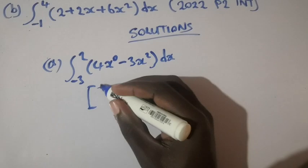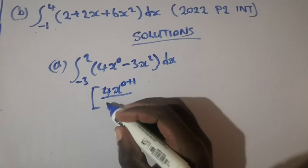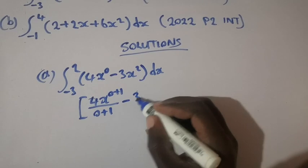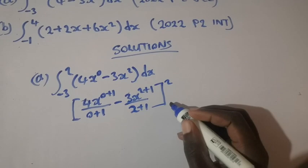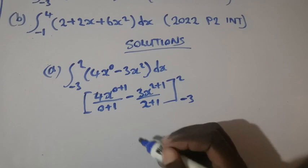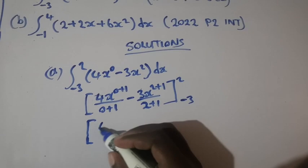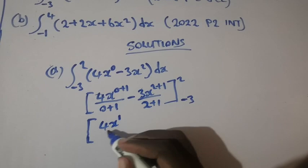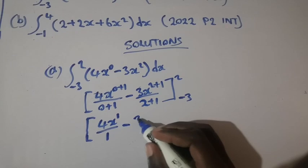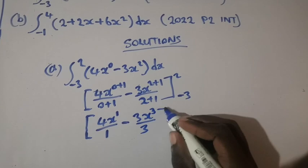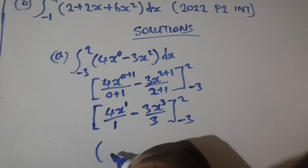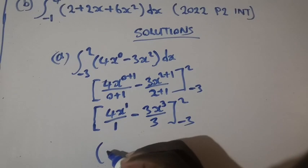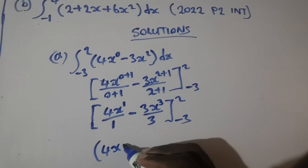So we are going to integrate: 4 is a constant, so it becomes 4x to the power 0 plus 1 over 0 plus 1, minus 3x to the power 2 plus 1 over 2 plus 1. This simplifies to 4x to the power 1 over 1, minus 3x to the power 3 over 3. Dividing, we get 4x minus x cubed, evaluated between the upper and lower limits.